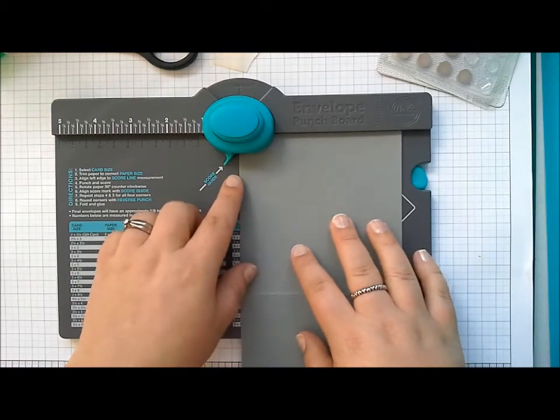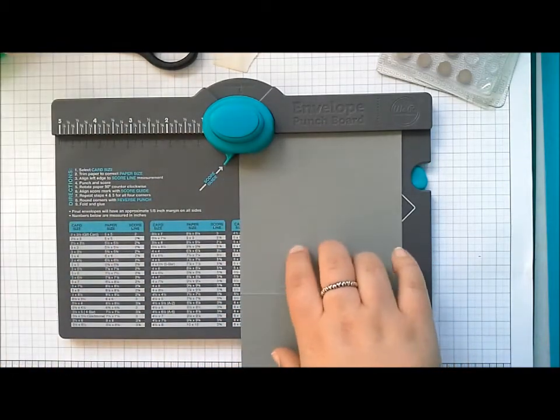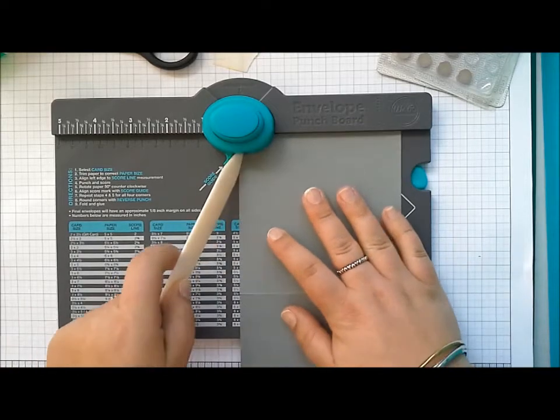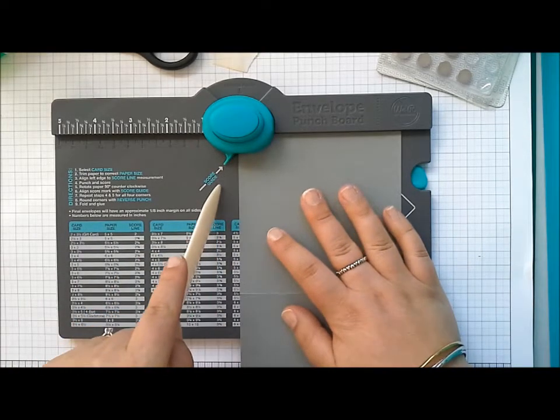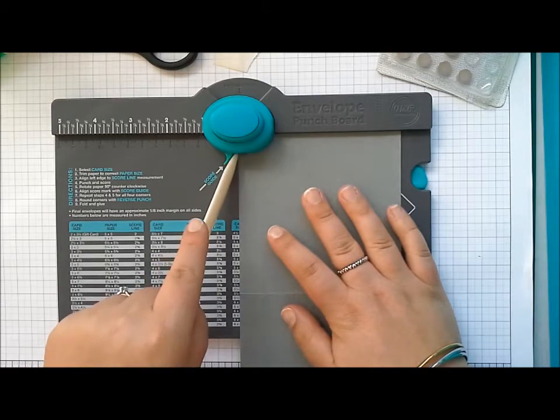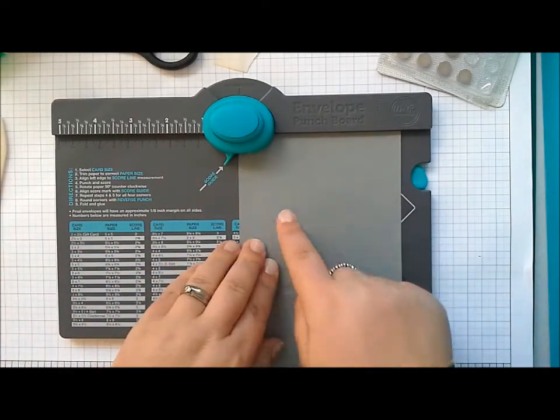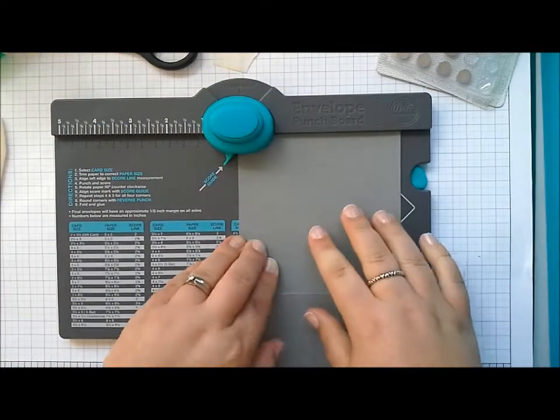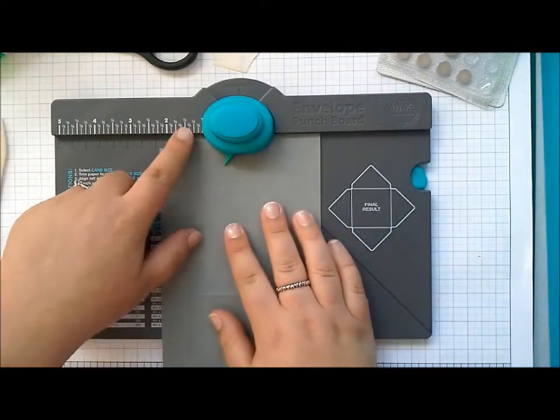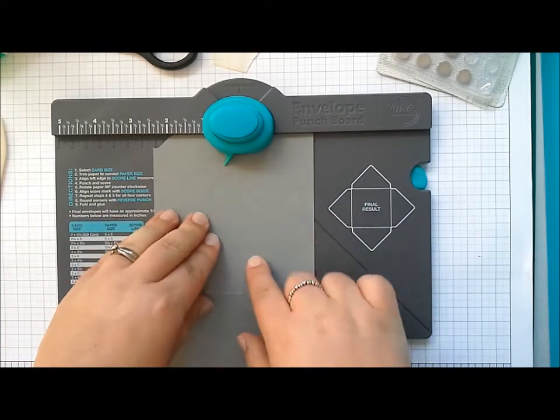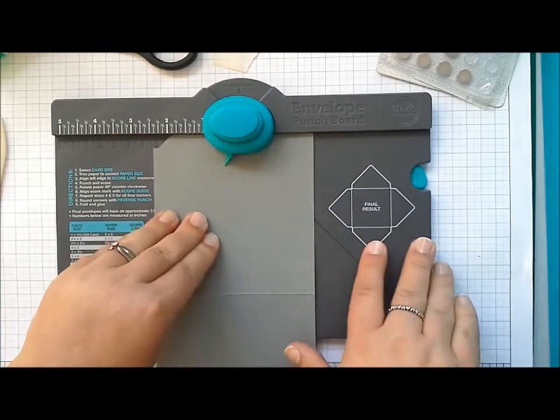You're going to line up with the far edge of the punch. When you try it, it makes a lot of sense if you can't quite see what I'm doing. All you do is punch and then we're going to move the cardstock along. There's measurements along the side here and you're going to move along to two and a half. That's how big I want my tabs.